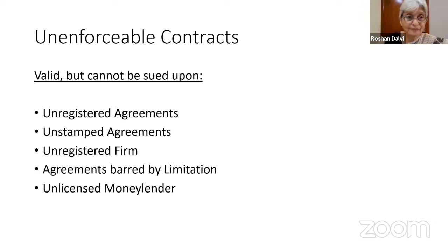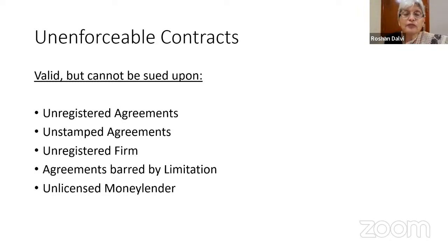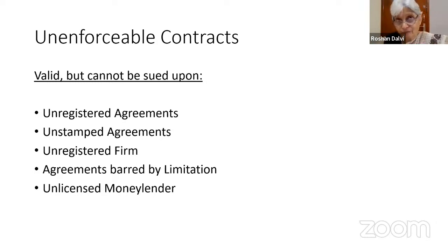The second thing is stamping of agreements, which is for the revenue. It is held that until the revenue is paid, nothing can be enforced. When stamping is either inadequate or not done at all, and it requires stamping — like a conveyance, power of attorney for sale, mortgage, or gift — it requires to be registered and stamped, and stamp duty has to be paid. There is no provision in the Stamp Act relating to collateral contracts or collateral purposes for suits or arbitrations. No stamping, no further procedure — that is the law as it stands today.